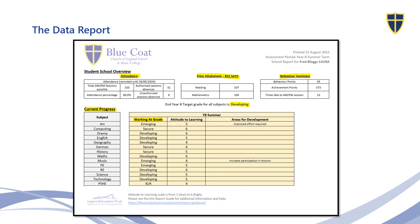We also provide a numerical attitude to learning. These are scored one to six. I will go through on the later slides what each of these mean, but it gives you a quick overview to know how your child is engaging within their learning within each of the individual subjects.